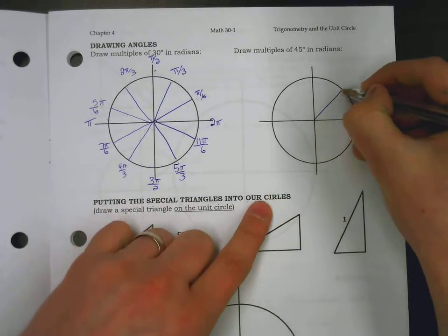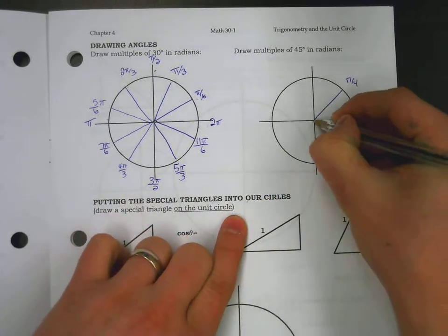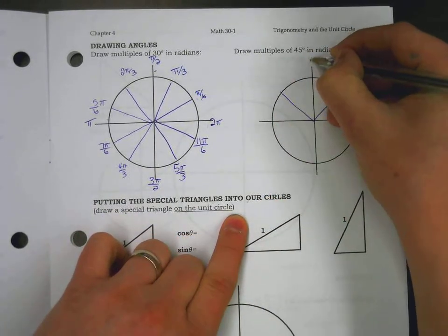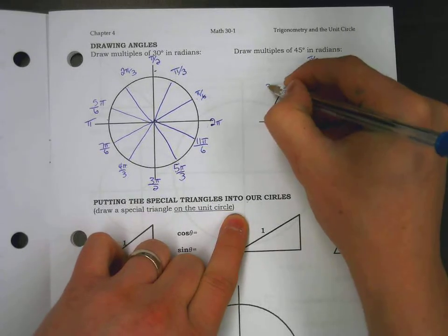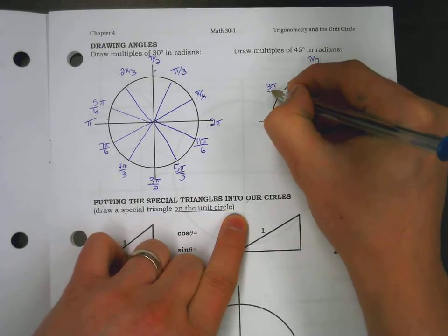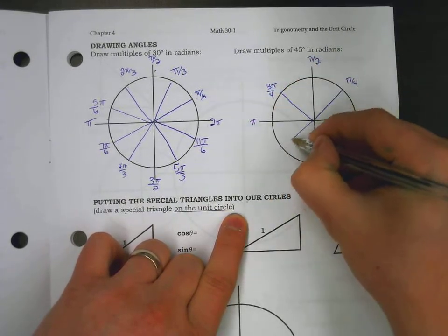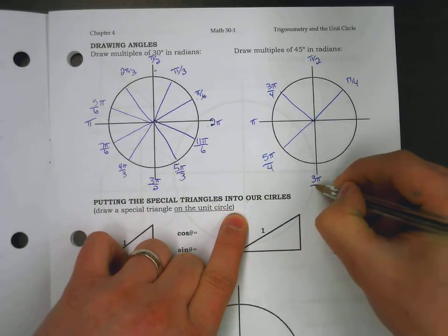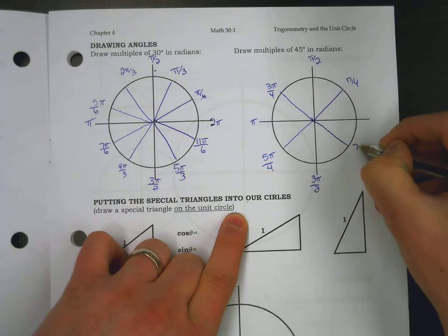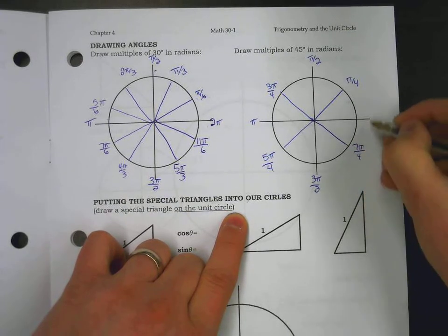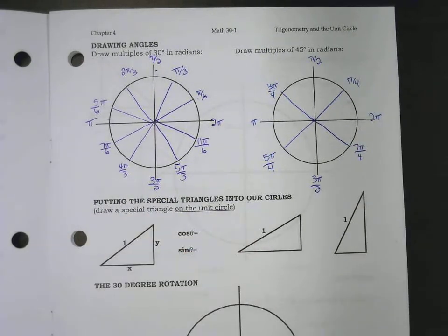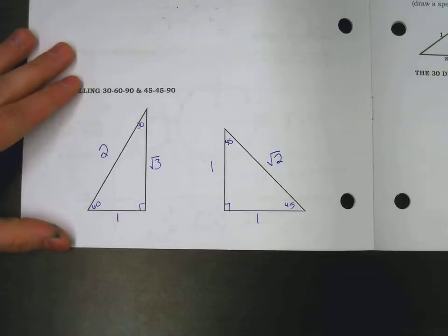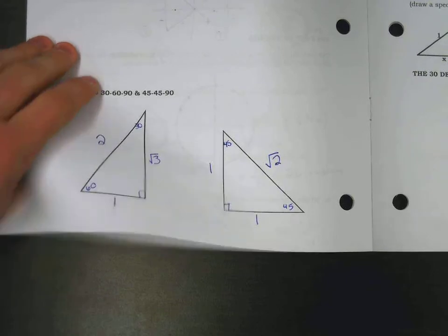There's also 45 degrees: π/4, 2π/4, 3π/4, 4π/4, 5π/4, 6π/4, 7π/4, and lastly 8π/4. So what we're going to do is take these angles and these triangles and put them all together.